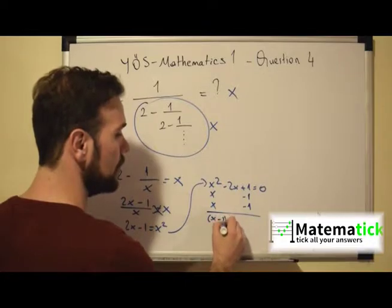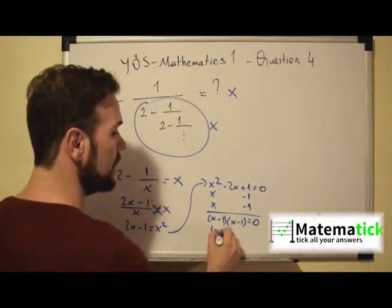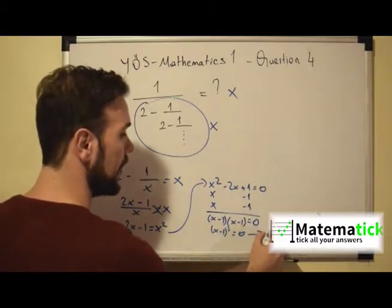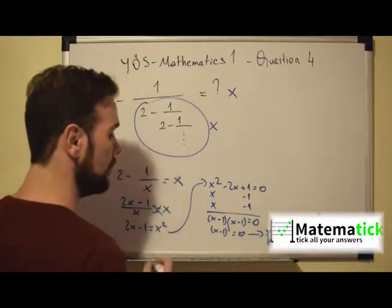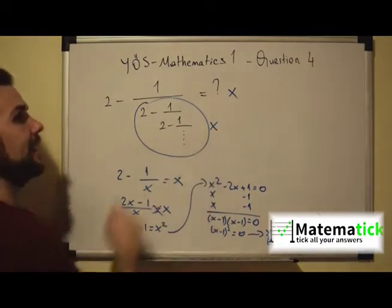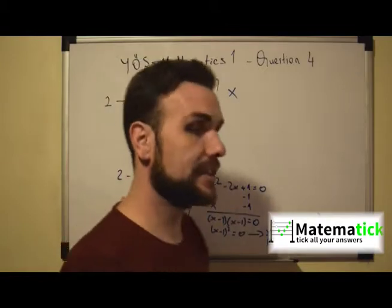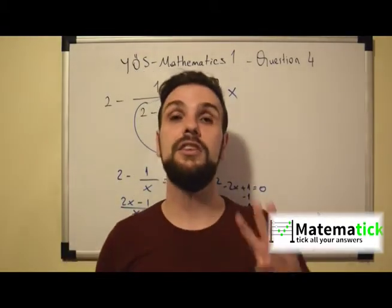We have (X minus 1)(X minus 1) equals 0, which is (X minus 1) squared equals 0. Therefore X minus 1 equals 0, so X equals 1. The right answer for this question is 1. Please don't forget — this is a useful hint that can save you a lot of time on your exams. This is the process you need to follow to get to the right answer.